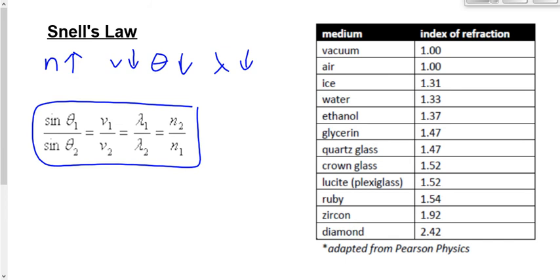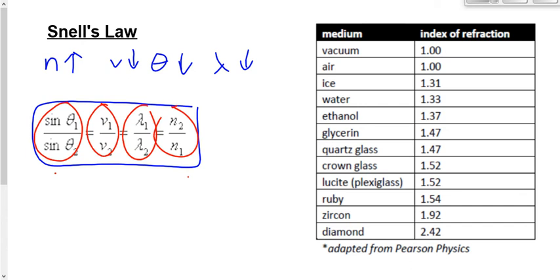When you're using this equation, you never have to use all four parts at once. You're going to use two parts at a time — whichever two parts fit the variables you're given. How do you decide which two parts to use? It depends on what information you're given. Whatever you're given, use those two parts.